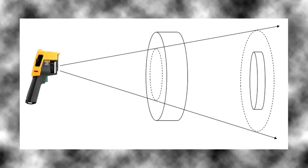In the second case, the target is smaller than the spot size, and any temperatures in that area will be averaged in with the temperature of the target.